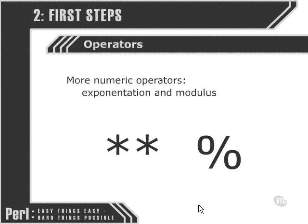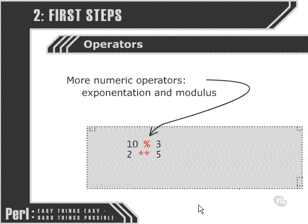Modulus is where we take two numbers and attempt to divide one by the other, and the modulus returns the remainder. Here's some examples: 10 modulus 3 will return the remainder of 1, because three threes make nine and we can't fit another three in, so whatever's left is the value returned. Two to the power of five — we can work quite quickly up the binary scale: two, four, eight, sixteen, thirty-two.